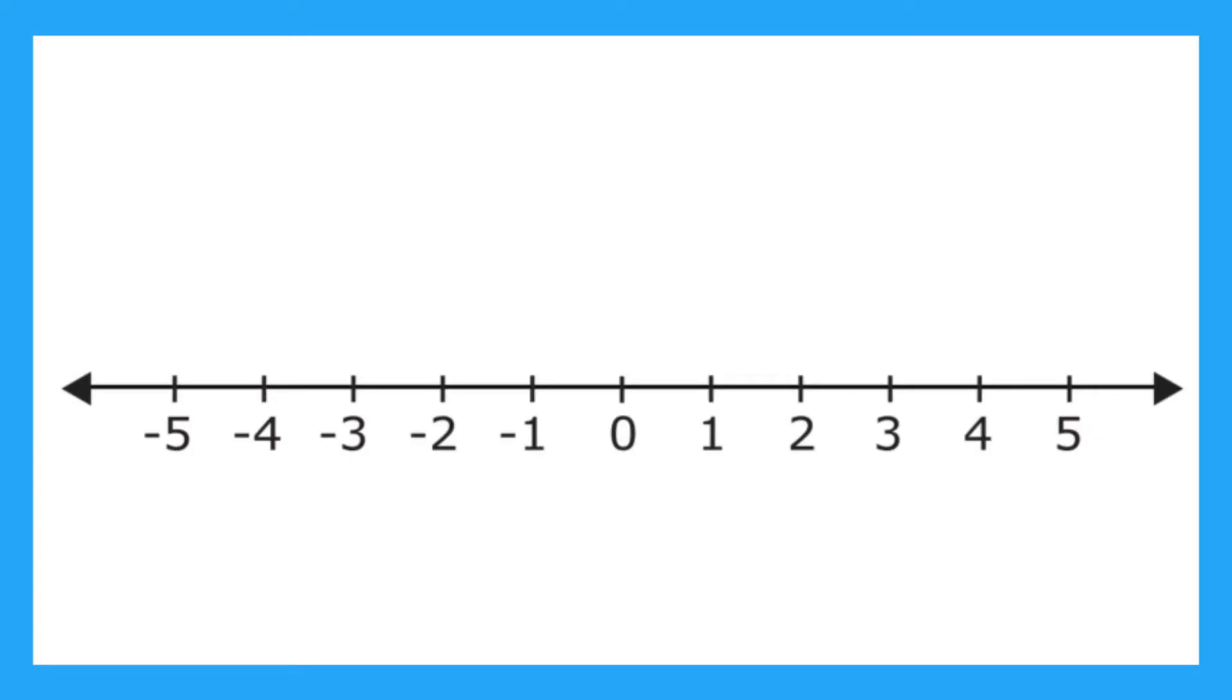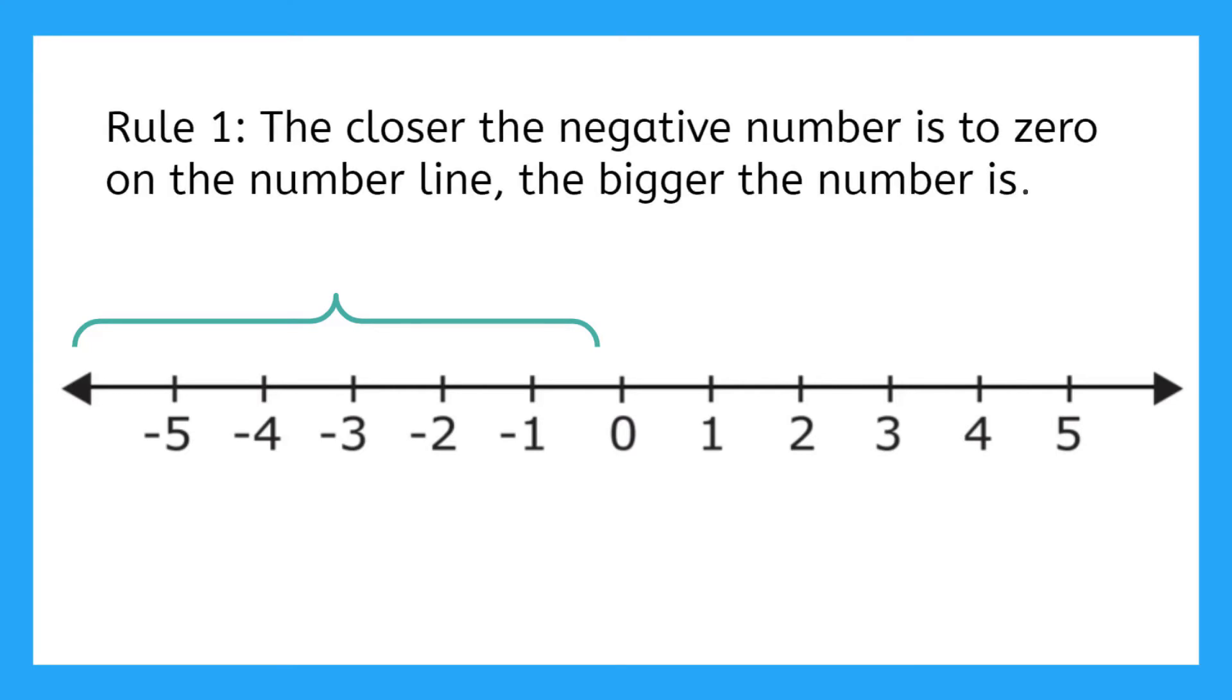In this lesson, we're really focused on this half of the number line and which negative numbers are larger or smaller. Here's the number one rule for negative numbers. The closer the negative number is to zero on the number line, the bigger the number is.